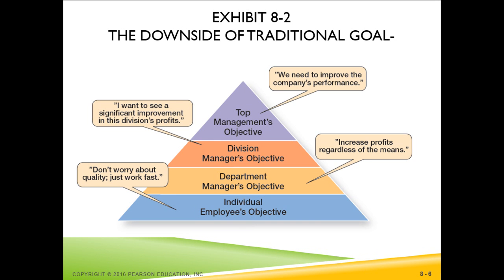Many times companies try to achieve short-term profitability by reducing the labor force, decreasing quality, or changing procedures to reduce costs — but they also increase customer dissatisfaction. How does advertising on a site like Groupon affect a company's long-term profitability? What changes can it cause within an organization? And finally, how could you use Groupon to avoid the negative side effects of advertising with them?